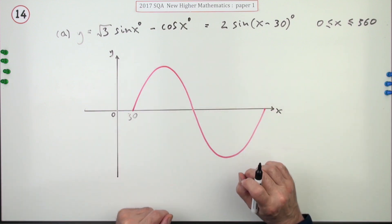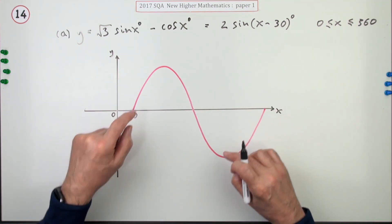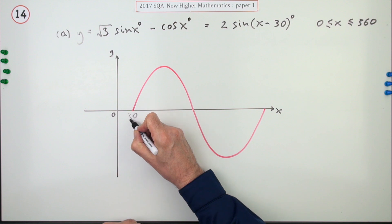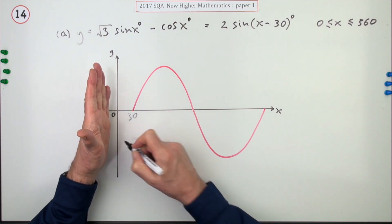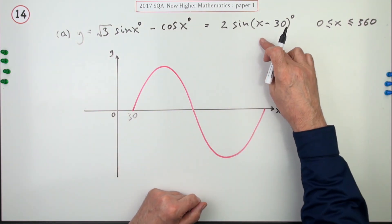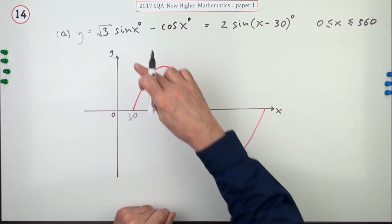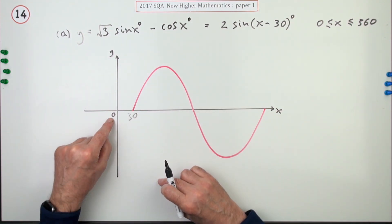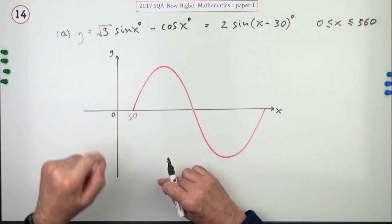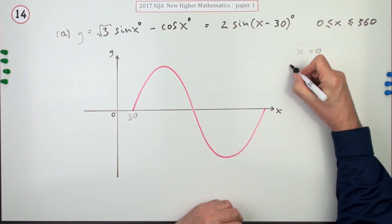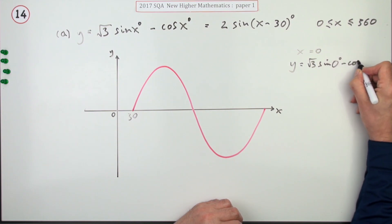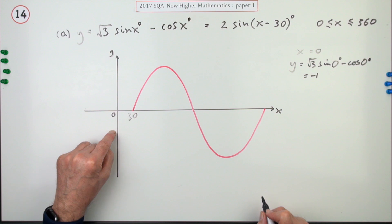When sketching a graph you need to show points of intersection with the axes and the turning points — all the relevant points. To find where it hits the y-axis, put x = 0 into the original equation: sin(0) = 0 and cos(0) = 1, so y = √3 · 0 − cos(0) = −1. The graph cuts the y-axis at negative 1.